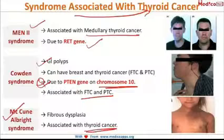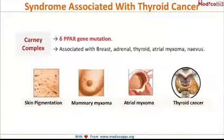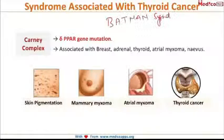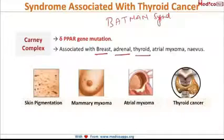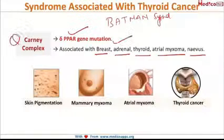McCune-Albright syndrome is associated with thyroid cancer and involves fibrous dysplasia. Lastly, Carney complex — also called Batman syndrome — is associated with the breast, adrenal gland, thyroid gland, atrial myxoma, and nevi, and occurs due to PRKAR1A gene mutation. Remember all these for exam purposes.